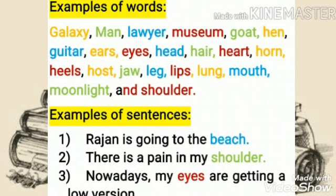These words are also called concrete nouns. Now, let's see some examples of sentences. First one: Rajan is going to the beach — 'Rajan' and 'beach' are called concrete nouns. Second one: There is pain in my shoulder. Third one: Nowadays my eyes are getting yellow vision. Here, 'shoulder' and 'eyes' come under the category of concrete nouns.